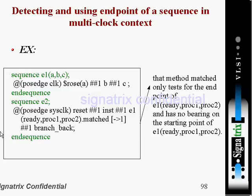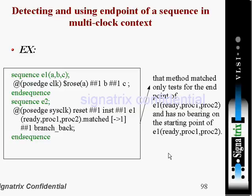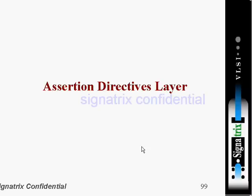The dot-matched method only tests for the endpoint of e1 and has no bearing on the starting point of e1. It depends on the endpoint of e1 — the endpoint of e1 is after c. The endpoint of e1 may not be the starting point of e2.